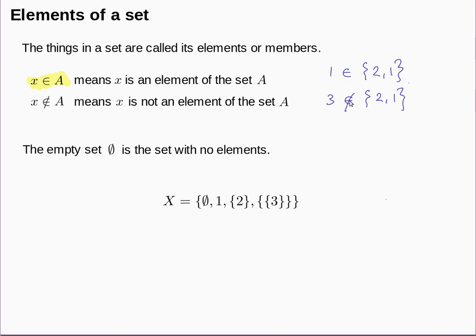There is a particular special set with no elements called the empty set, written as ∅ (a zero crossed out). Sometimes you'll see the empty set written as a pair of set brackets with nothing between them.